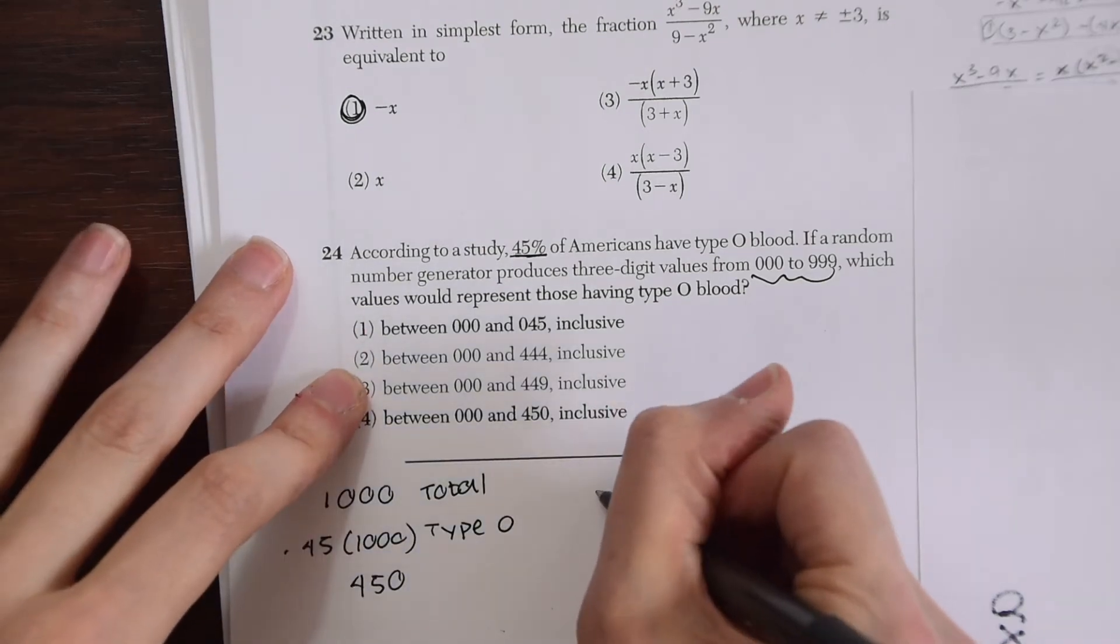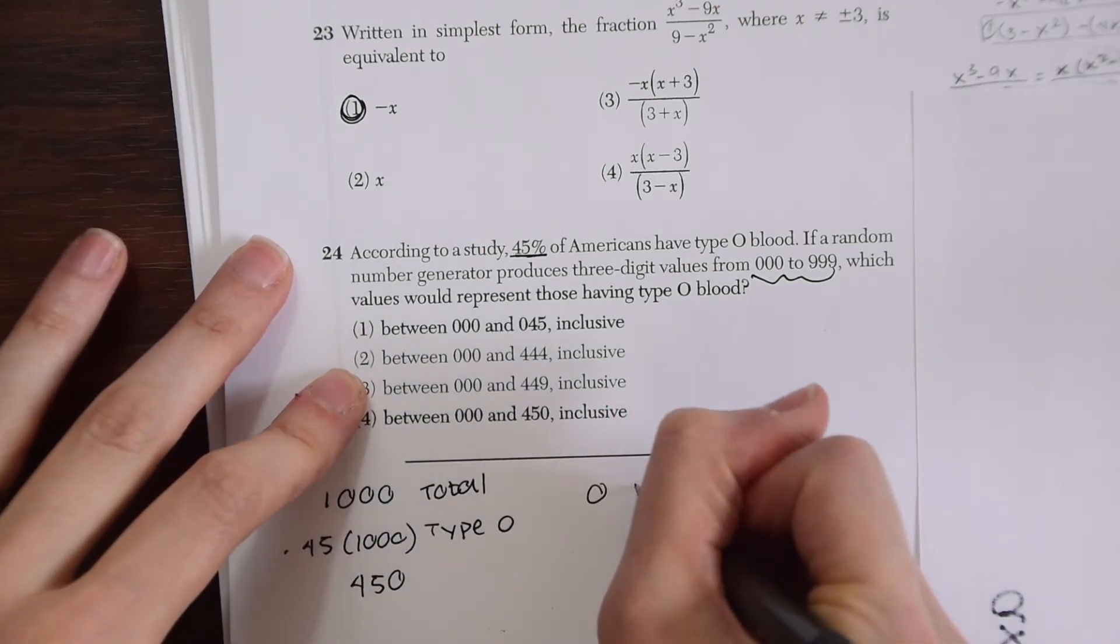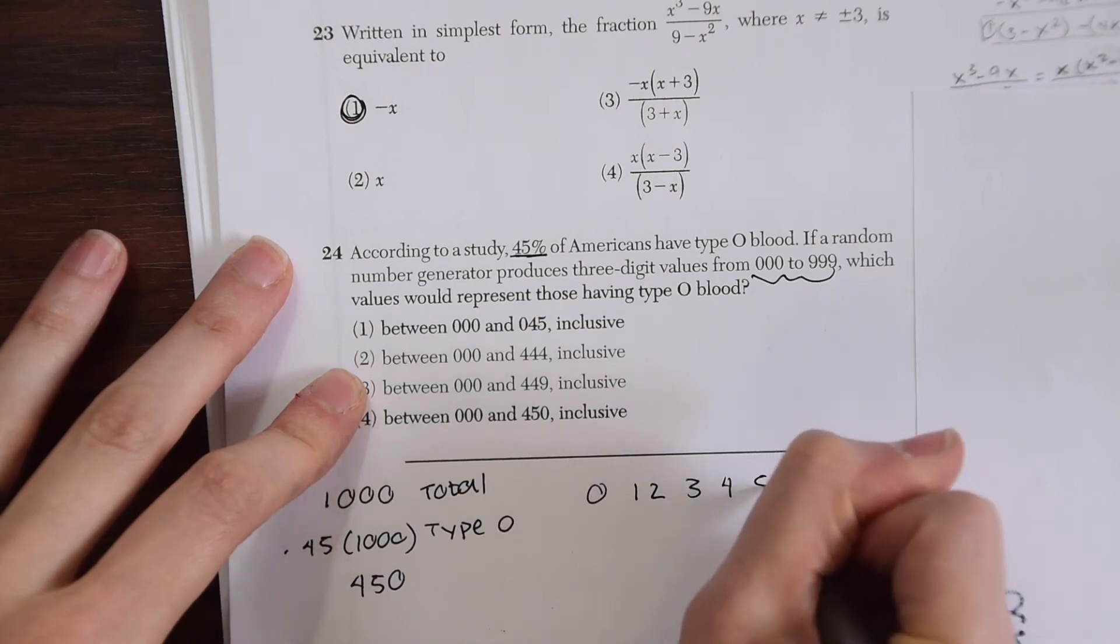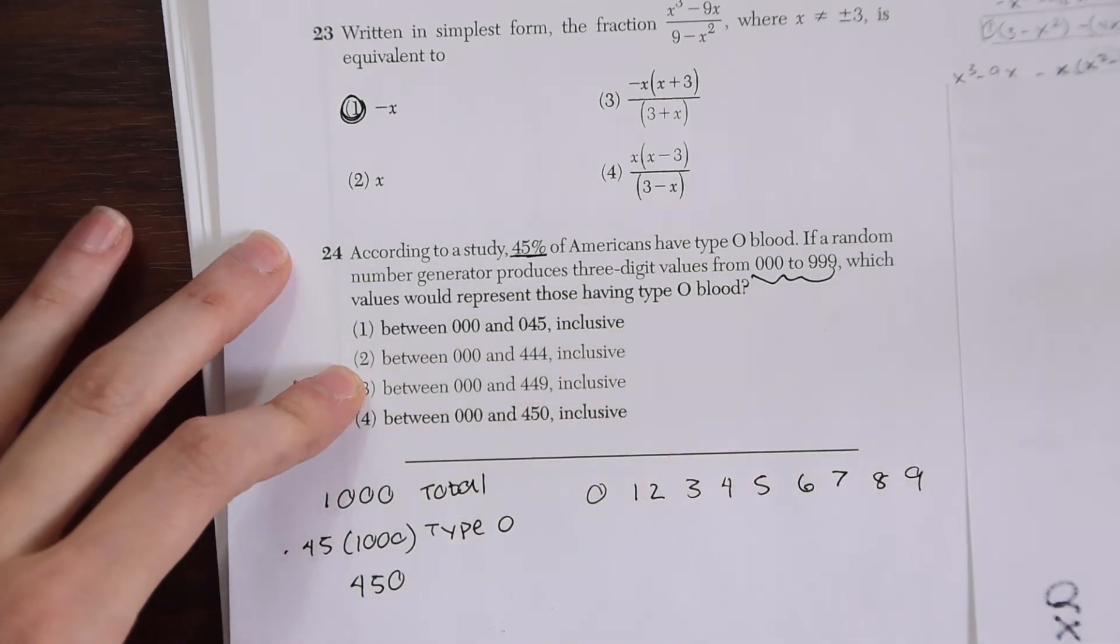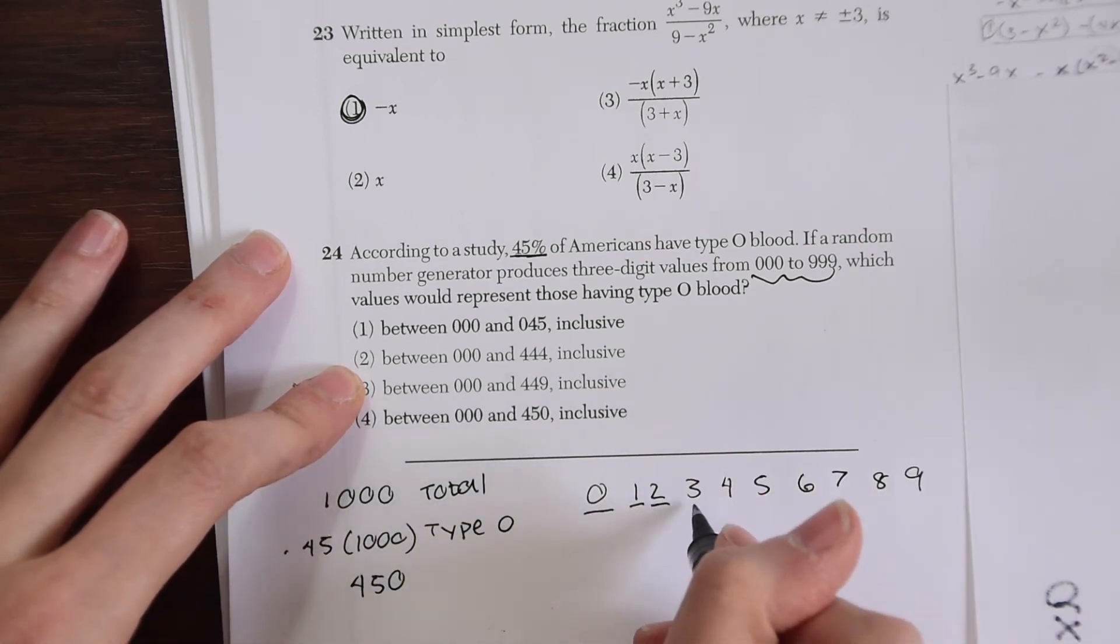Like let's say we had numbers 0 to 9: 0, 1, 2, 3, 4, 5, 6, 7, 8, 9. So how many numbers do we have? We go up to 9 yeah but how many numbers do we actually have here? We actually have 10 numbers.